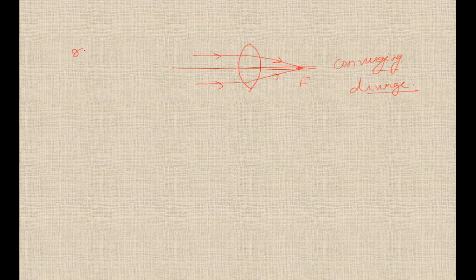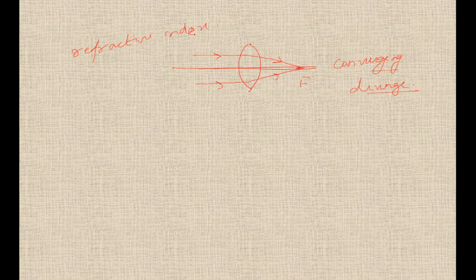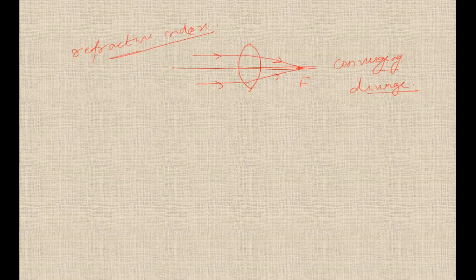Why this path changes is due to change in refractive index of the medium. I'm not going to teach you optics right now, so I hope most of you would know that when the refractive index changes, light changes its path. And thus, a lens can be used to converge or diverge the light. So this is with regard to a lens.